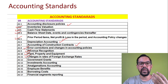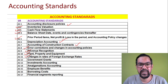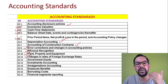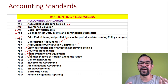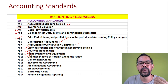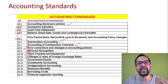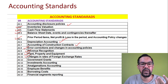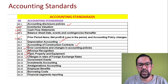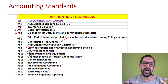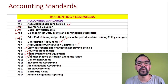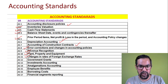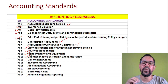Accounting Standard 11 covers Changes in Foreign Exchange Rates. If a particular company is dealing in foreign exchange — doing export or import business — they will definitely have some impact from foreign exchange prices. This standard addresses how these prices impact overall transactions, transactions in foreign currencies, financial statements of foreign operations, forward contracts, currency swaps, and interest rate swaps.